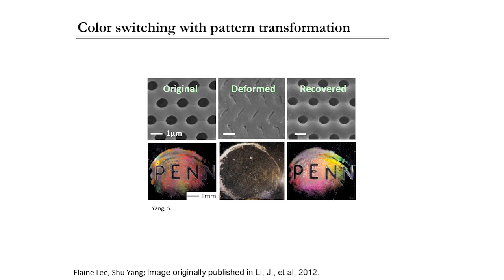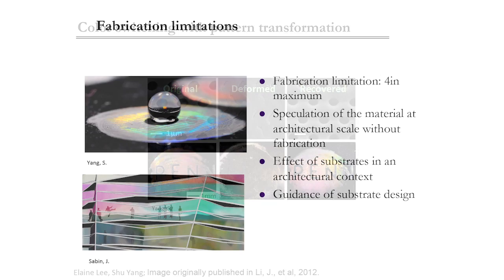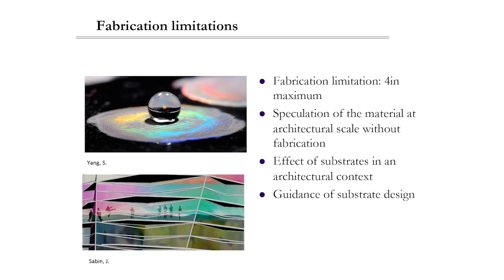This is an example of a predefined geometric pattern embedded within a shape memory polymer material displaying structural color change under deformation and recovery. Some of the limitations we're up against obviously include scale — currently we're limited to four inches maximum within the eSKIN sample. Our role as architects on the team also involves the speculation of the material at an architectural scale, in addition to producing models for visualization and simulation of these biological and material behaviors.